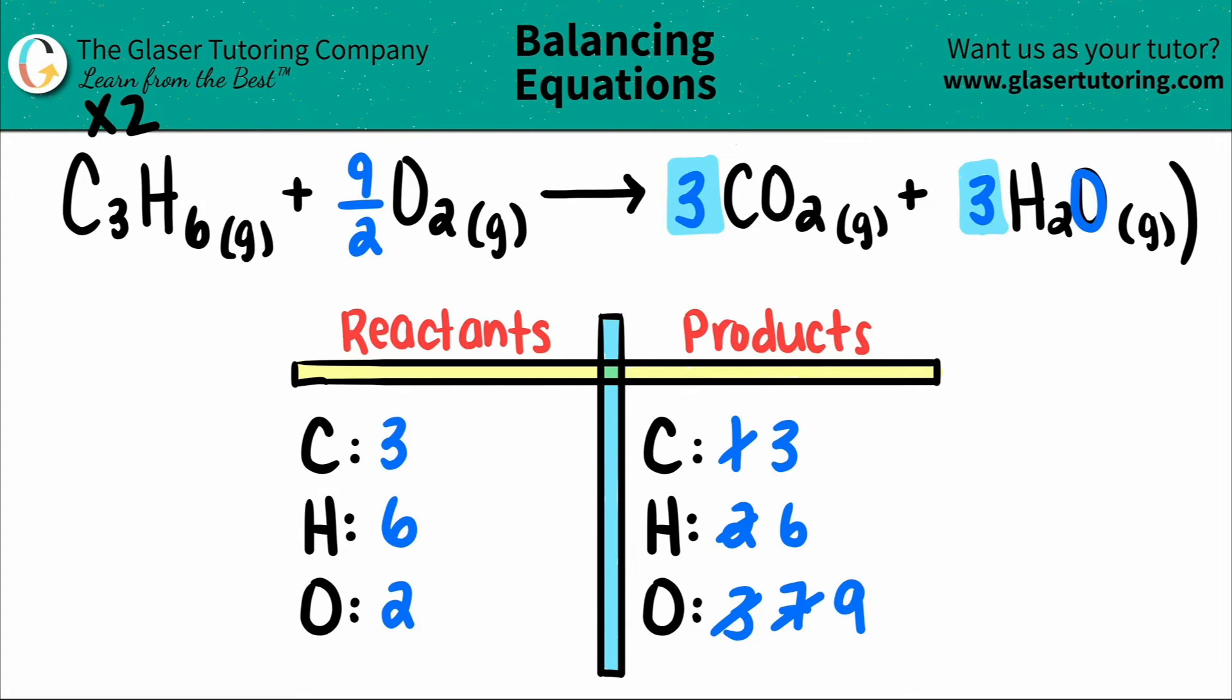Those are all going to be times by two. So I had one C3H6. One times two is now a two. Two times nine over twos, the twos will cancel, so you're just left with nine. Two times three is now a total of six. And then two times three is a total of six. And now you are balanced.